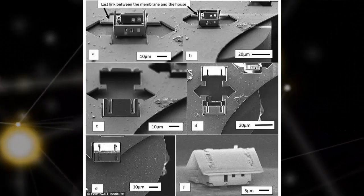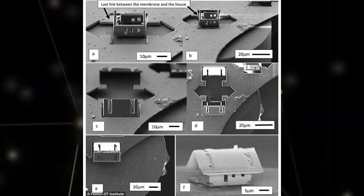To construct the micro house, the scientists used a mix of origami and nanometer-precise robotics.